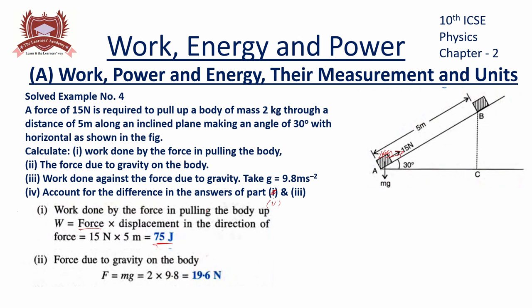Now, the next thing that we have is the force due to gravity. So it is having a force of mg, mass multiplied by acceleration due to gravity. So at this point, it would be 19.6 newtons.